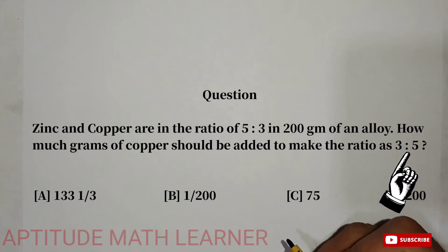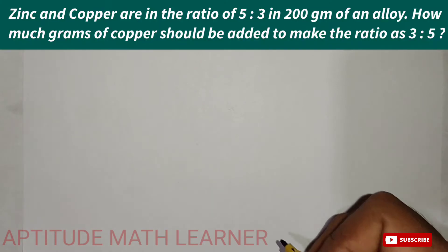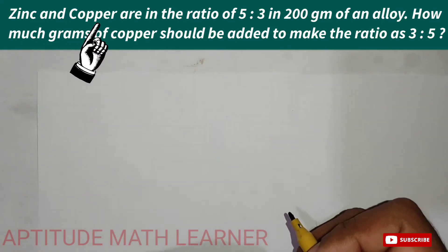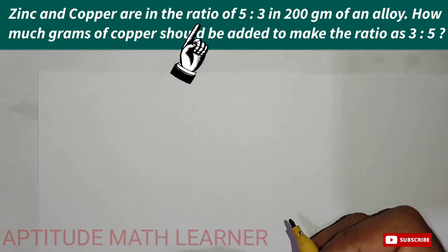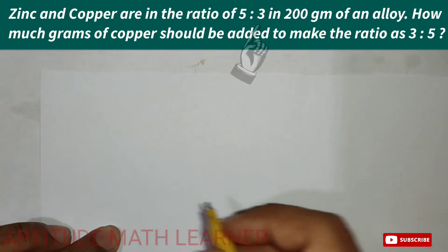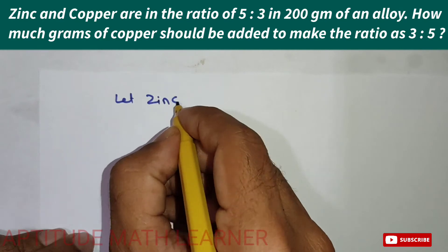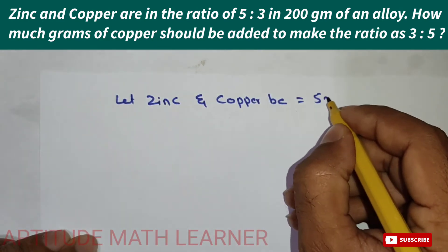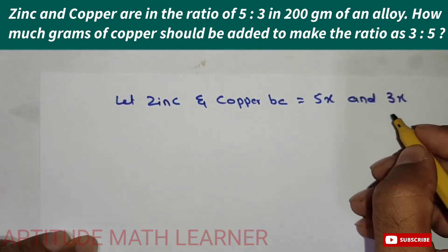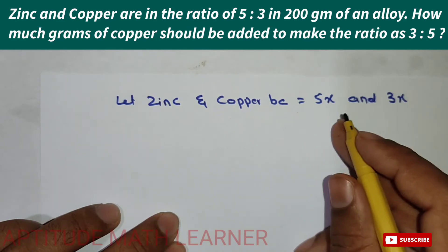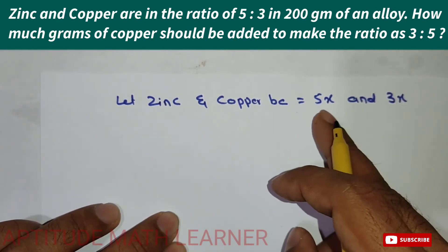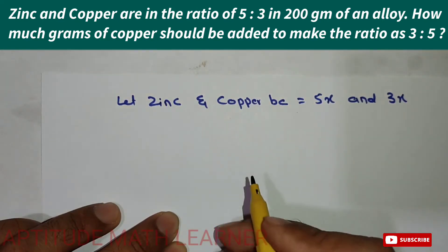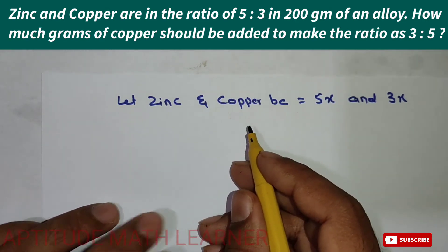We have to find out the amount of grams added to achieve the new ratio. The first thing we do is let zinc and copper be in the ratio 5x and 3x. We have taken zinc and copper in the ratio 5 and 3, represented as 5x and 3x.